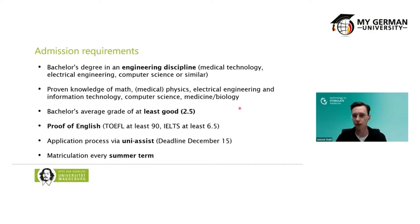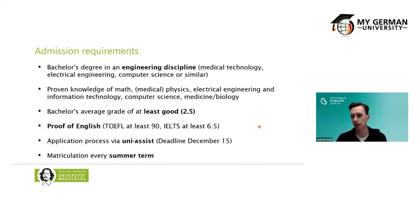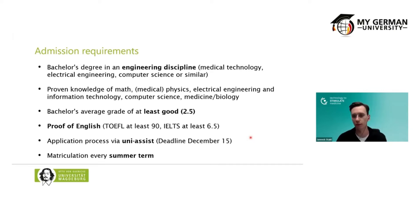Your bachelor's average grade should be at least 'good' in the German academic grading system — that is 2.5 or better. You must also prove your English language skills with either the TOEFL test with at least 90 points or the IELTS test with at least 6.5. The application process is conducted via uni-assist. Since we matriculate every summer term, the deadline is December 15th, with applications opening from October 15th of the previous year.